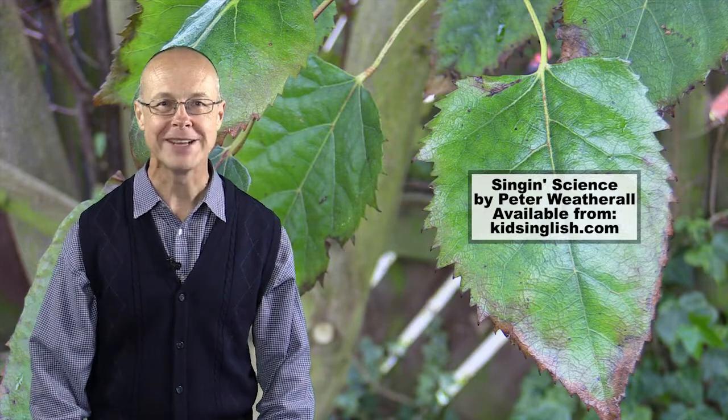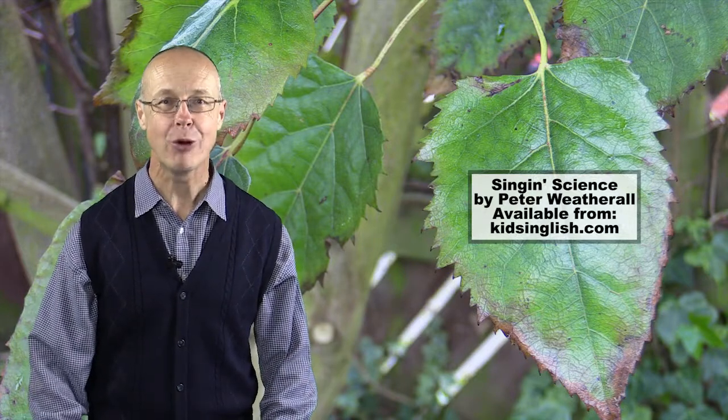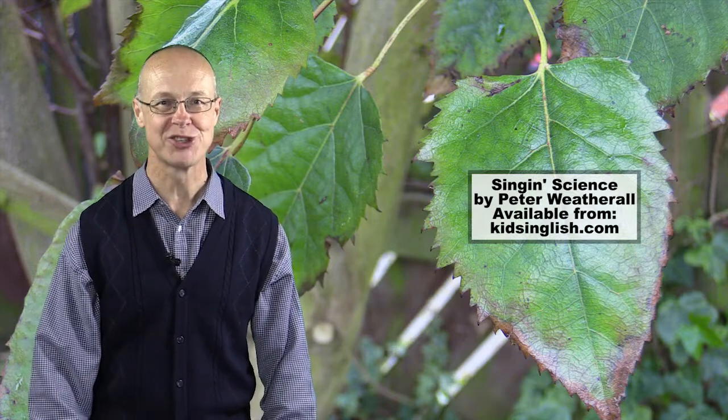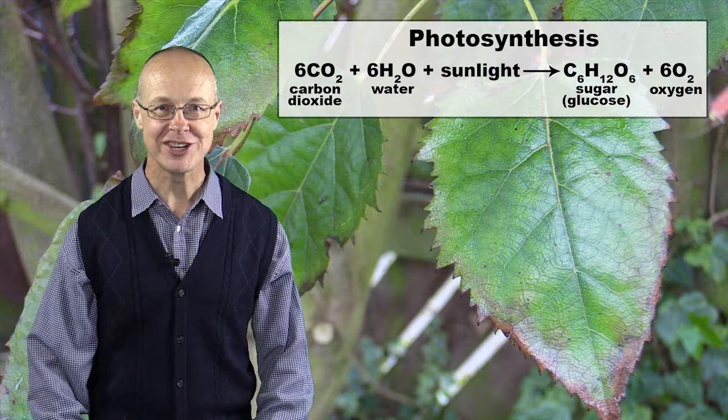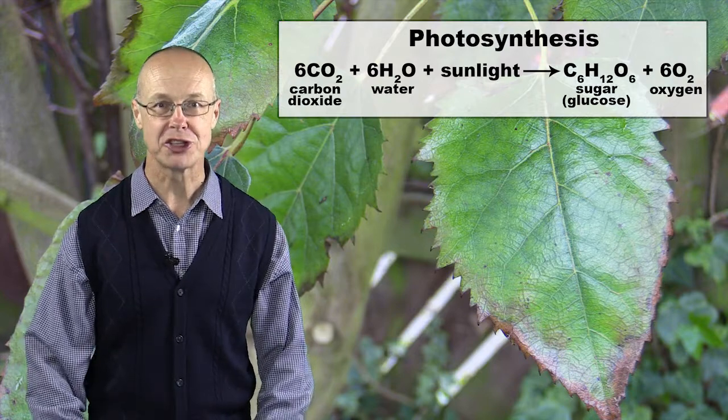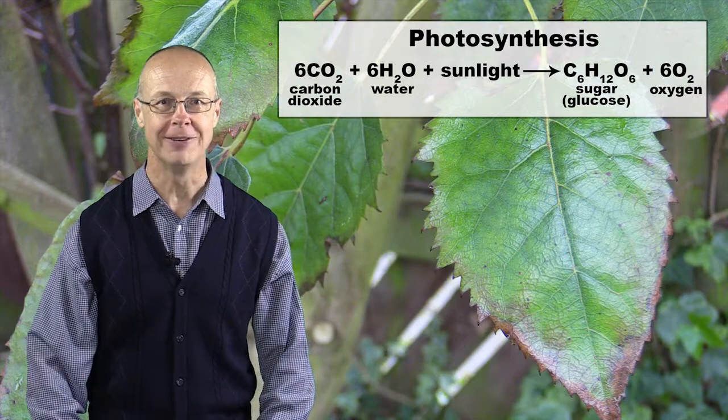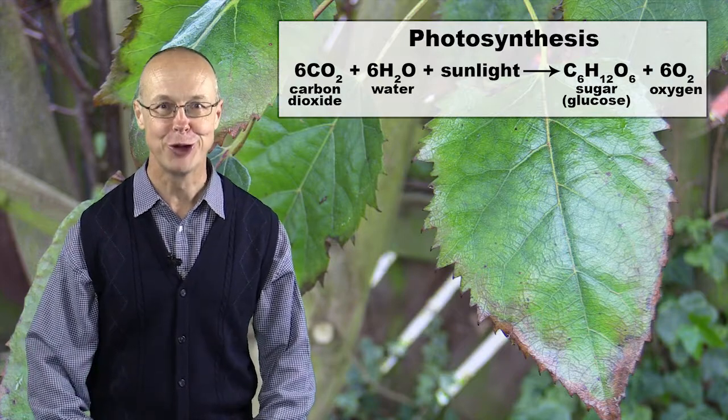Almost all living things on the planet depend either directly or indirectly on what goes on in the green leaves of plants. A leaf captures energy in sunlight and uses it to convert carbon dioxide and water into sugar and oxygen in a process called photosynthesis.